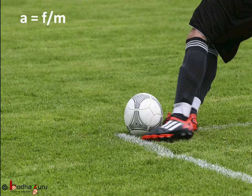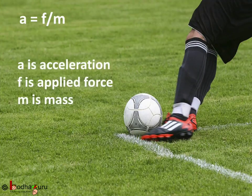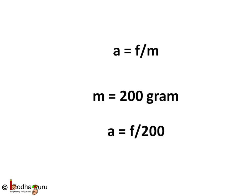According to Newton's second law of motion, acceleration A is equal to applied force divided by mass — that is, A = F / M. Say the mass of the football is 200 grams, so M = 200 grams. Therefore, A = F / 200. So we have two variables here: acceleration A and force F, for a mass of 200 grams.